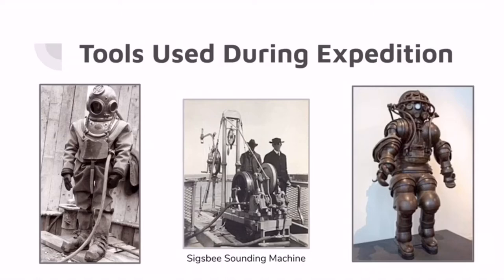In 1874, Commander Charles D. Sigsby modified the Thompson sounding machine. The machine uses wire rope to take ocean depth soundings. This improved instrument was termed the Sigsby sounding machine.